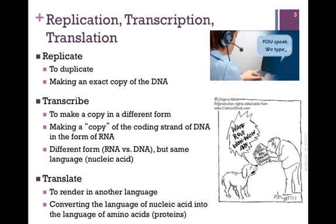To replicate simply means to duplicate — we're making an exact copy of the DNA. To transcribe means to make a copy in a different form. In cellular transcription, we're making a copy of the coding strand of DNA in the form of RNA. It is a different form, RNA rather than DNA, but it is the same language — the language of nucleic acid. To translate means to render in another language. The process of translation therefore involves converting the language of nucleic acid into the language of amino acids to form proteins, and we'll look at that process in the next chapter.